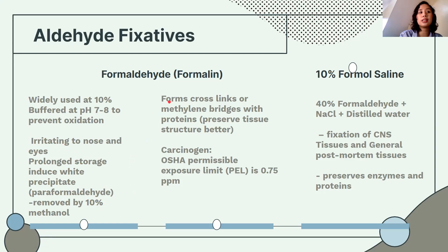Prolonged storage induces a white precipitate called paraformaldehyde, which can be removed by 10% methanol. Formaldehyde acts as a fixative by forming methylene bridges — cross-links — which preserve and harden the tissue.